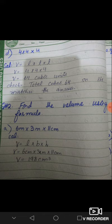6 meters multiplied by 3 meters multiplied by 11 centimeters. L multiplied by breadth multiplied by height. So 6 centimeters multiplied by 3 centimeters multiplied by 11 centimeters.